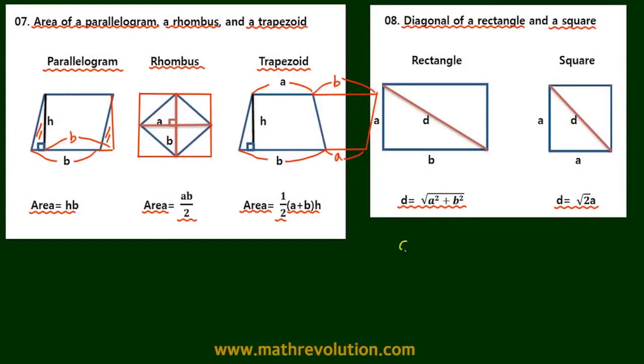So we used the Pythagorean theorem here. D squared equals A squared plus B squared. Therefore, the length of D will be the square root of A squared plus B squared.